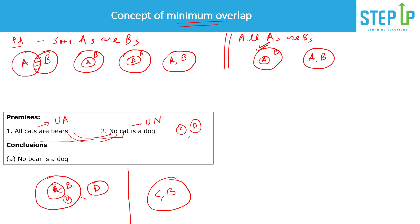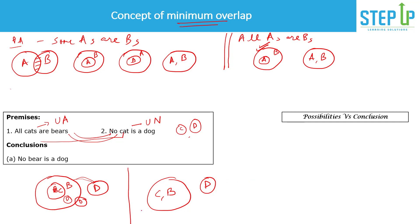These are all possible cases for the first diagram. For the second diagram — where cat equals bear — 'no cat is a dog' means dog must be fully outside the combined cat-bear circle, giving only one possible case. Now comes the important distinction: there is a difference between a possibility and a conclusion. A conclusion must be true in all the different possible cases.